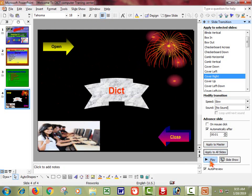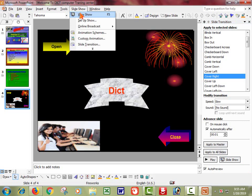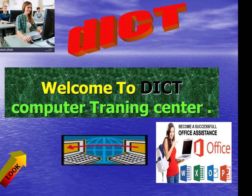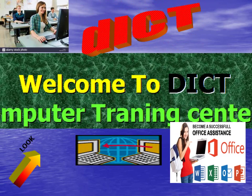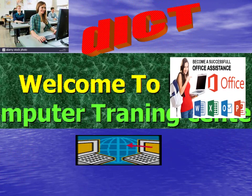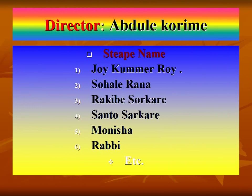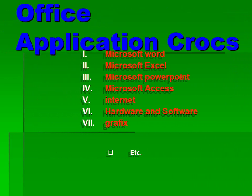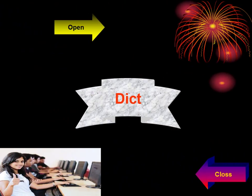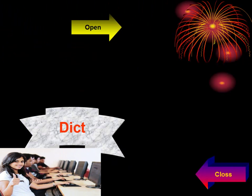Now we are going to click the slide show, and we are going to click the view show. If we click the view show, then we are going to automatically review. Friends, we are going to automatically review. You can see the presentation on the screen — click the view show, click the button.